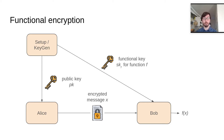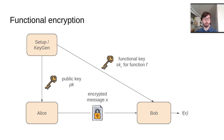Notice a similarity with homomorphic encryption, which also enables computing on encrypted data, but usually there the result is returned back to an encryptor. In the case of functional encryption, the decryptor should be able to decrypt only the result.